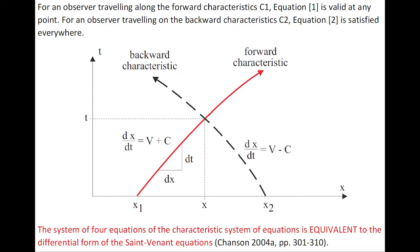That is, for an observer traveling along a forward characteristic, equation 1 is valid at any point. And conversely, for an observer traveling on a backward characteristic, equation 2 is valid everywhere.